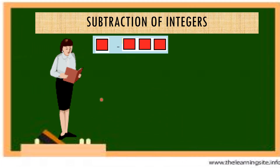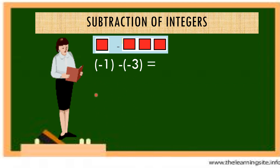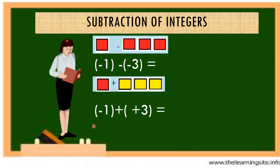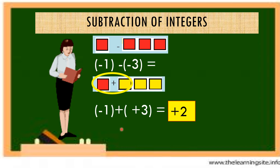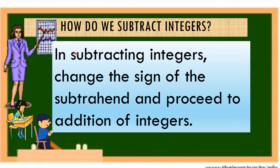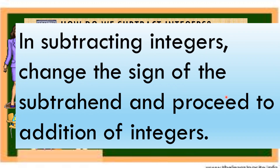Next: negative 1 minus negative 3. Change the sign of the subtrahend and proceed to addition — it becomes negative 1 plus positive 3. Since 1 plus negative 1 is 0, the result is positive 2. In subtracting integers, change the sign of the subtrahend and proceed to addition of integers.